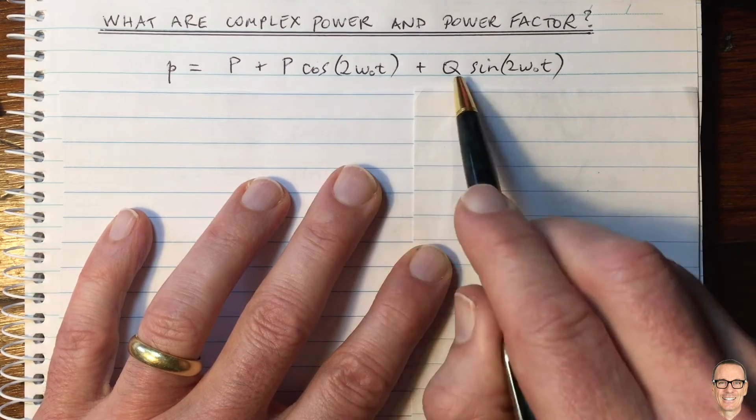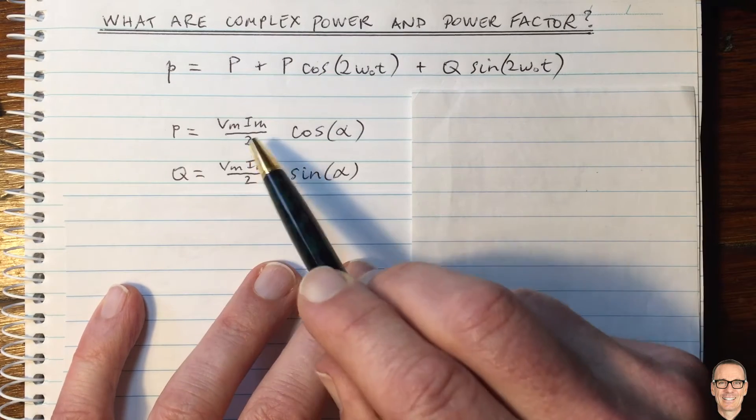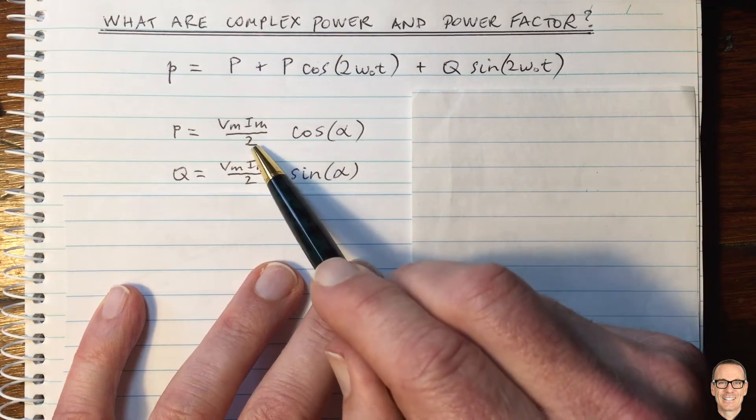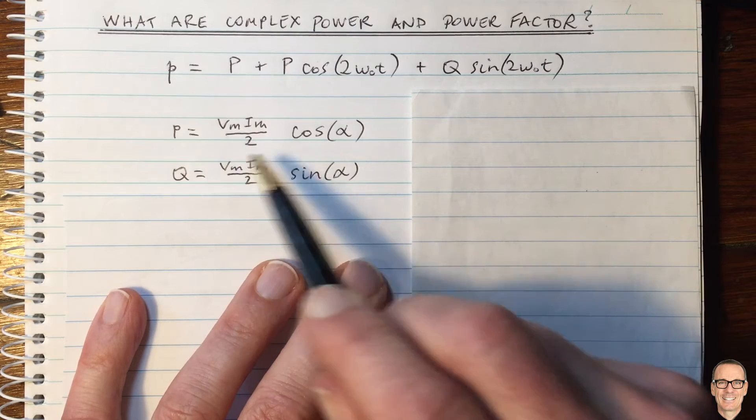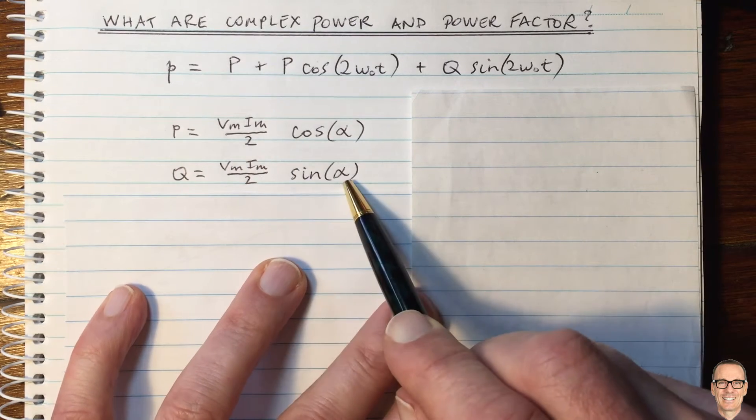So let's see what the values of P and Q are. Well, here they are here. They're the voltage times the current divided by 2, and for P it's multiplied by cos alpha and for Q by sine alpha.